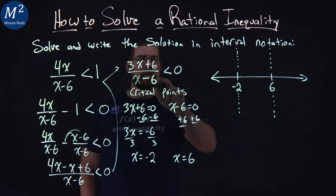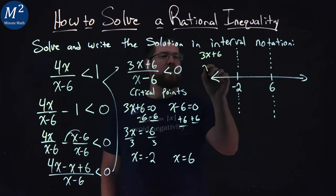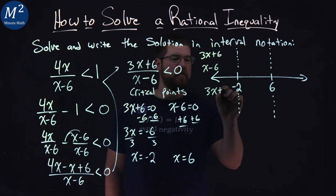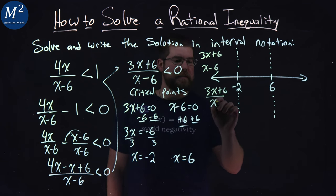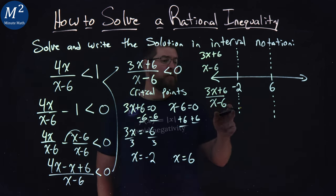I'm going to separate this. We're going to look at the numerator and denominator here: 3x plus 6, and the denominator x minus 6, and then I'm going to rewrite that expression, 3x plus 6 over x minus 6.